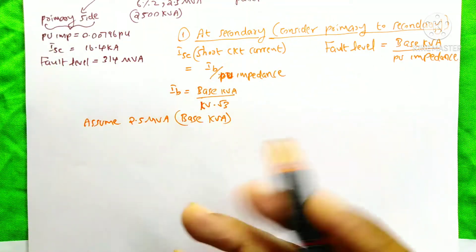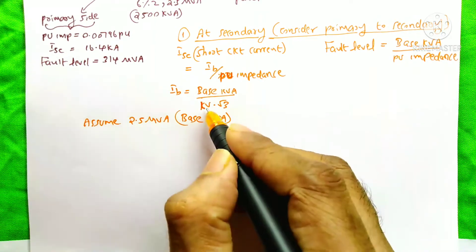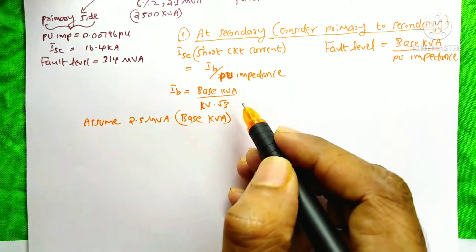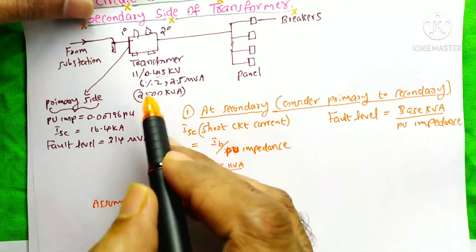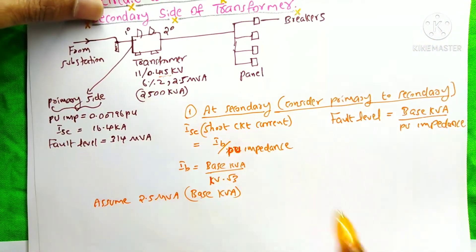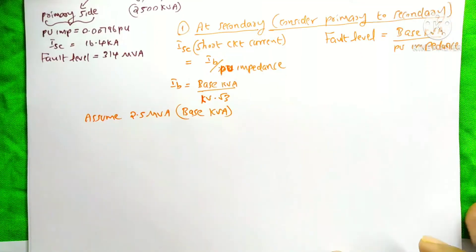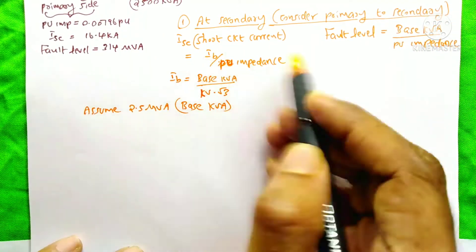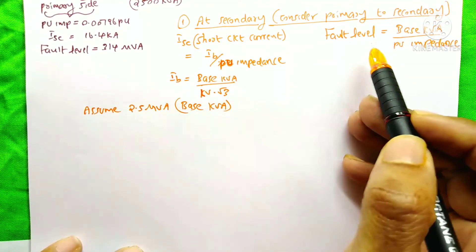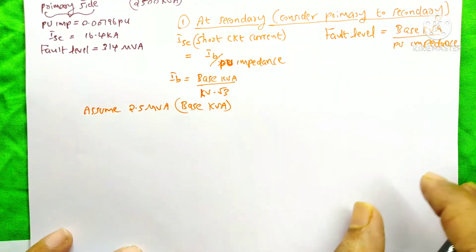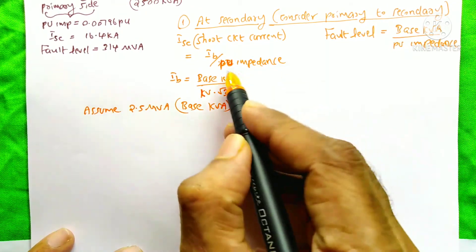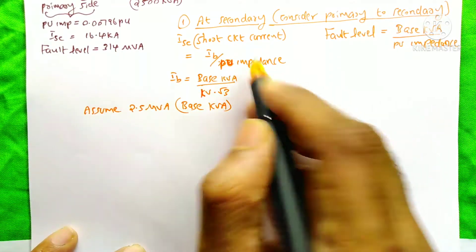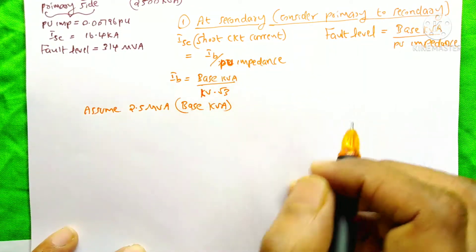The kV at the secondary side is 0.415 kV. To calculate the short circuit current and fault level, one missing factor is the per unit impedance. So we need to find this per unit impedance. If you don't have it, and you only have the short circuit current or fault level, you can find the per unit impedance because ISC equals IB divided by per unit impedance, or the fault level equation is base kVA divided by per unit impedance.